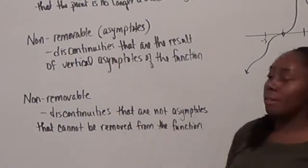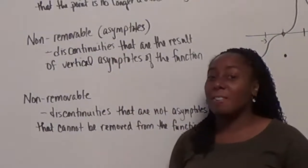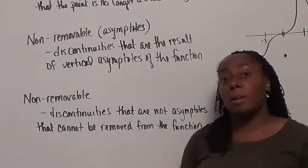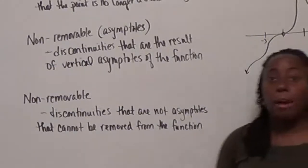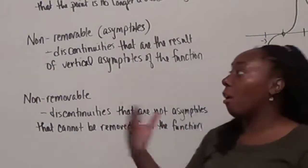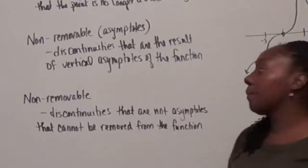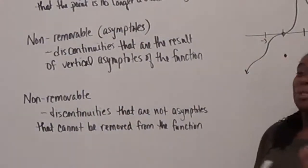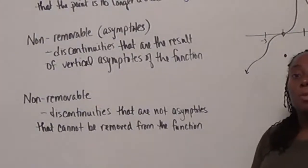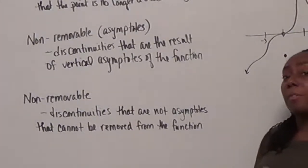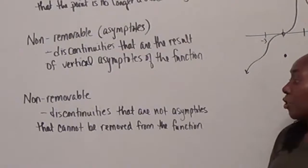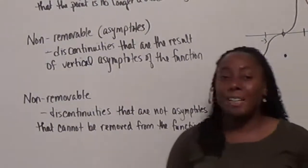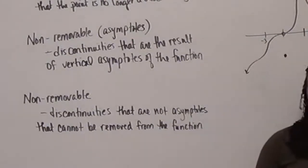Vertical asymptotes are basically the discontinuities where the function is undefined. An example would be something like 1 over x. In that graph, x equals 0 would be a non-removable asymptote. The other type is non-removable discontinuities that aren't asymptotes, but they're still discontinuities for the function. If we look at the function, it can't be rewritten.